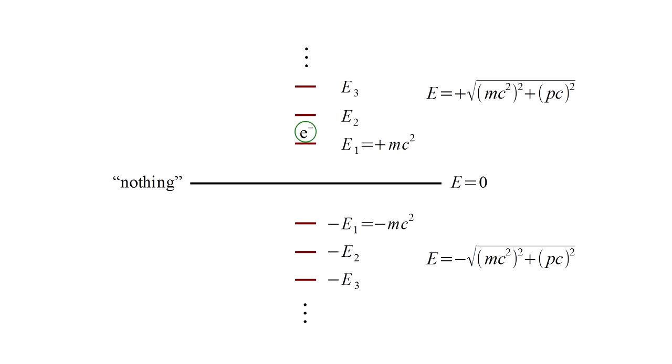The existence of negative energy states means that an electron with energy E1 can transition to energy minus E1 with the emission of a photon. From there, it may continue falling to ever lower energy states and emitting photons without end.